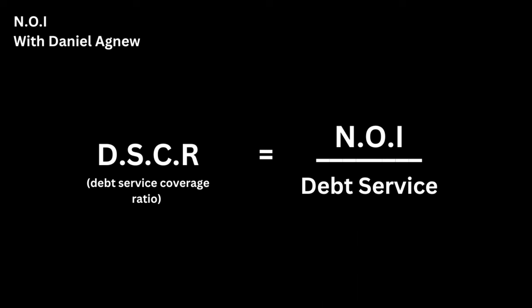Debt service coverage ratio is another piece you can find using NOI. You do so by taking NOI and dividing it by the debt service — your mortgage payments or the payments you're making to the seller, whatever type of financing you're doing. That debt service is not included in the NOI formula; it is not a part of an operating expense and should be left out when calculating your net operating income.